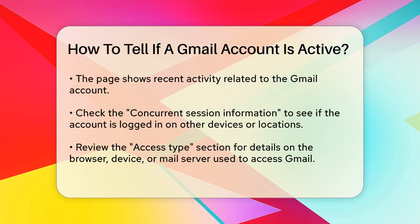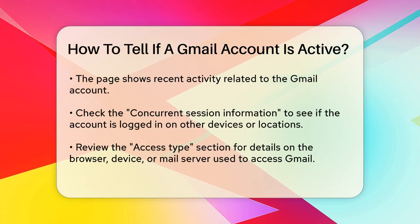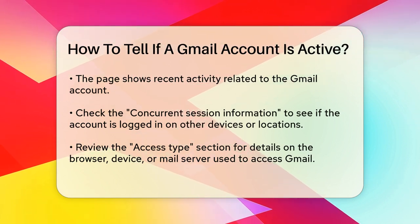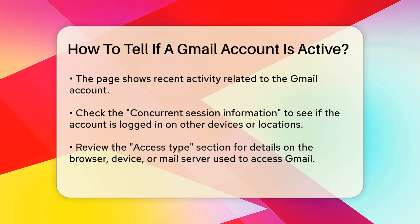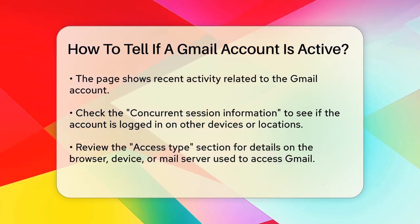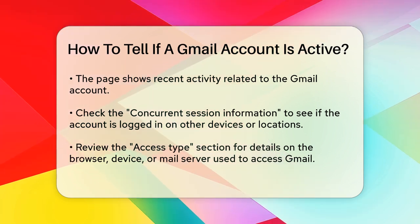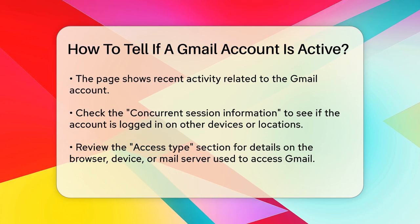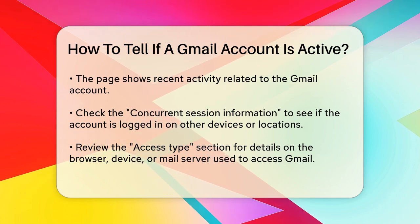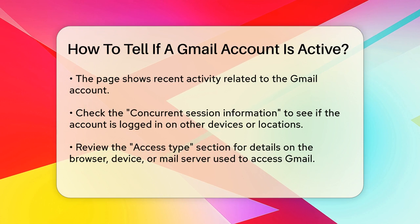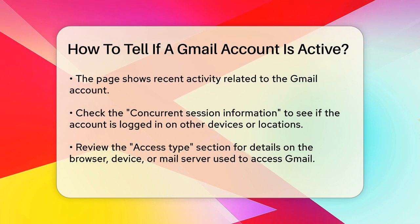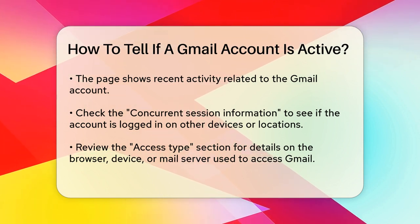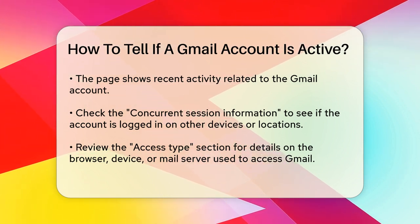The Concurrent Session Information section will show if you're signed into Gmail on another device, browser, or location. This helps you identify if someone else is using your account. The Access Type section will display the browser, device, or mail server — like POP or IMAP — that accessed Gmail. For example, you might see entries for Chrome, Firefox, or even a mobile device.